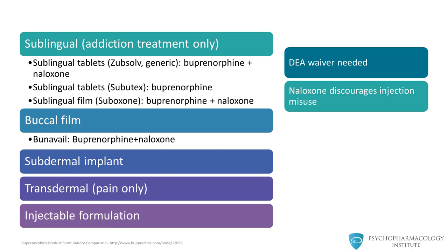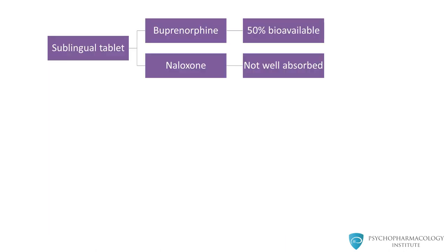If the physician wants to prescribe sublingual formulations for addiction treatment, the physician must have the X waiver or the DA waiver. The reason the sublingual formulations come in two versions is that the combination tablet contains naloxone, and this combination tablet is the default choice for the vast majority of patients in treatment. The naloxone is included because it discourages injection misuse of the medications. When the tablet is taken as prescribed sublingually, buprenorphine is 50% bioavailable, but naloxone has extremely poor bioavailability, potentially in the single digits or even less.